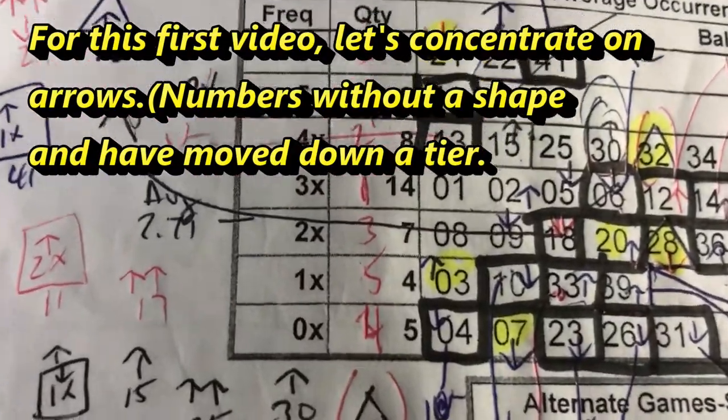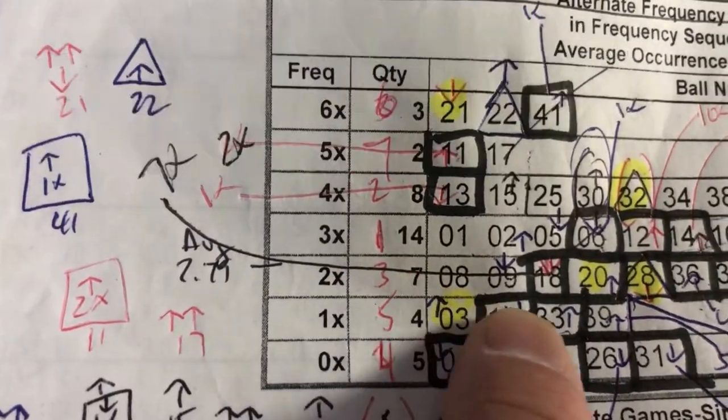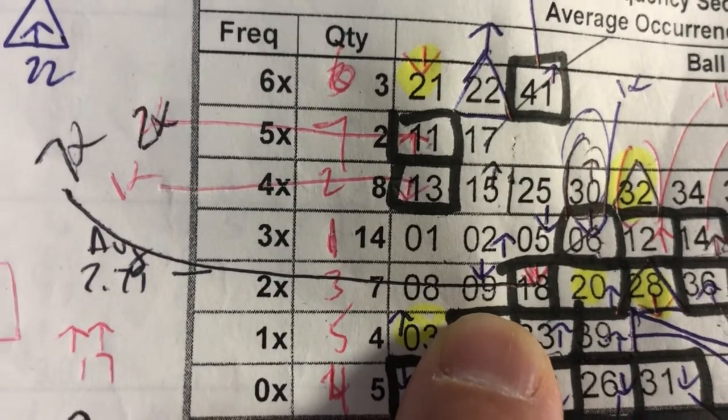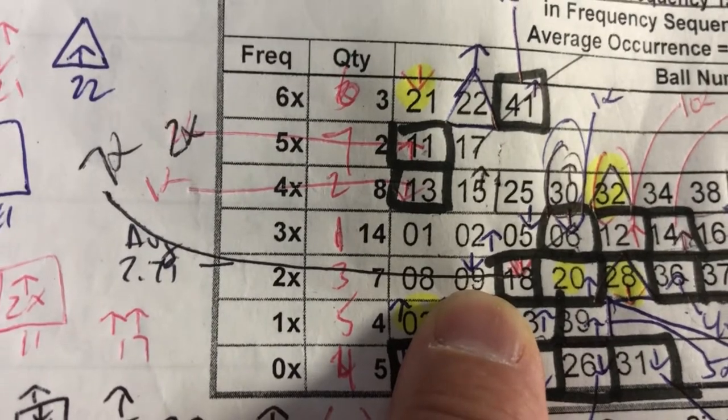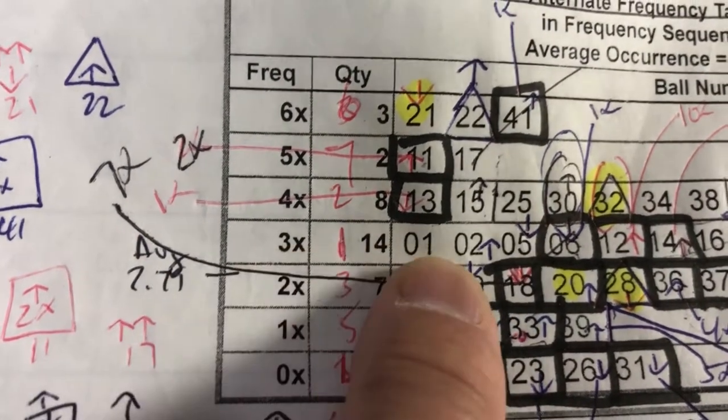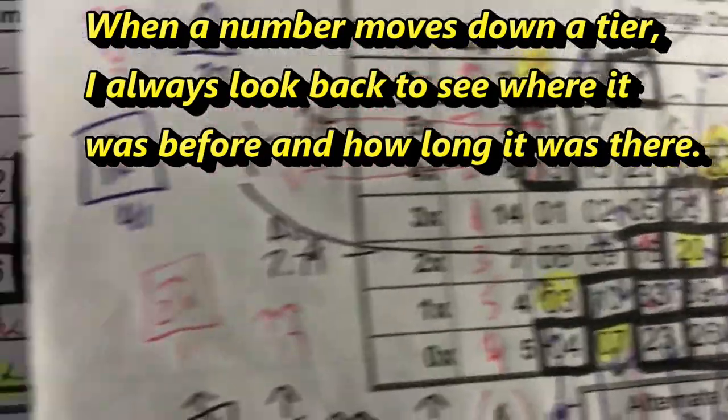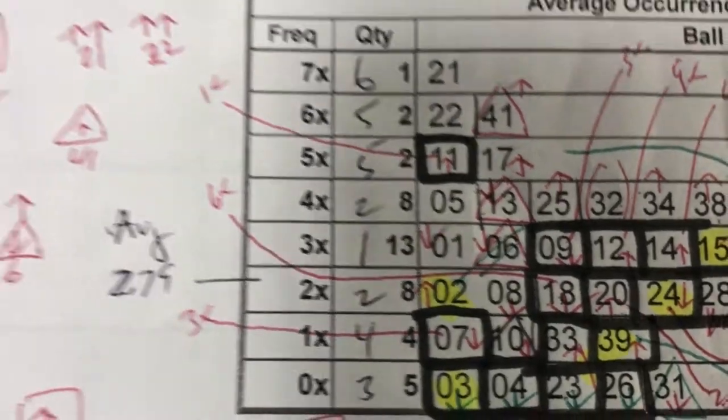Let's look at arrows going down. Let's look at one, two, three, tier number three, 2x, number nine. There's no square box, it's just an arrow. So that means it came from tier four, 3x. Why did it come down? I would have to go back to October 8th or before that. So let's look at October 8th's draw.